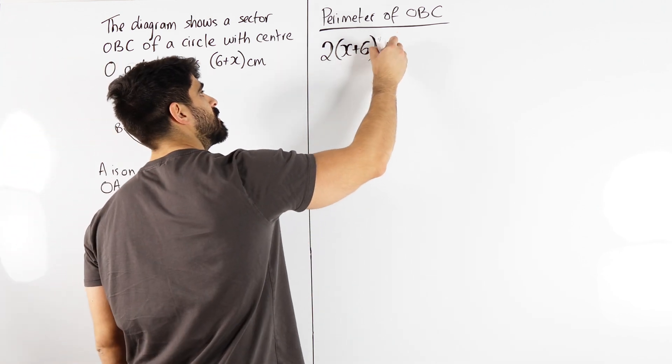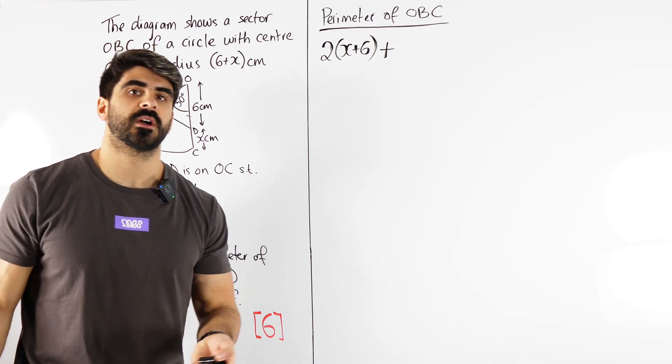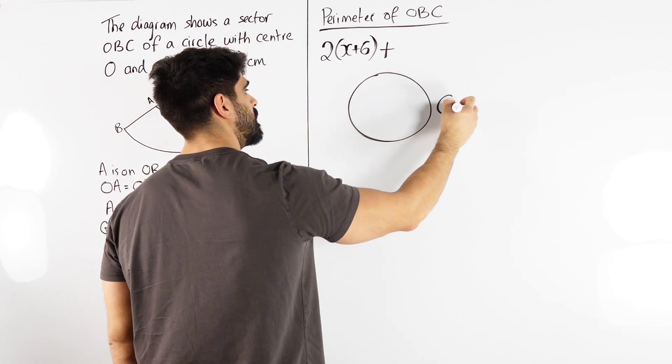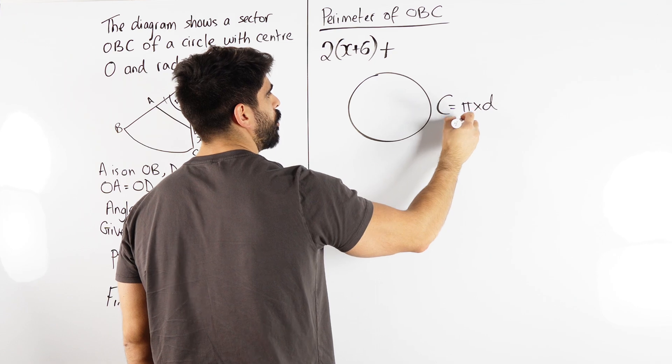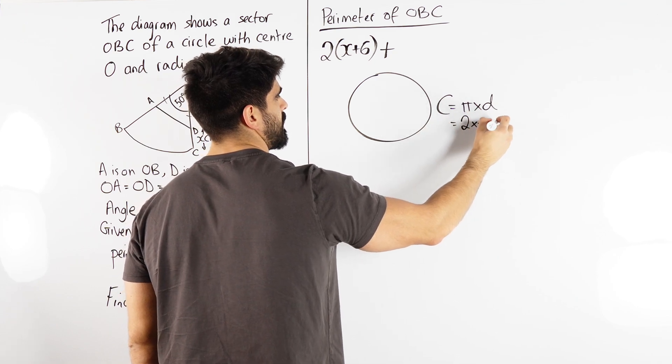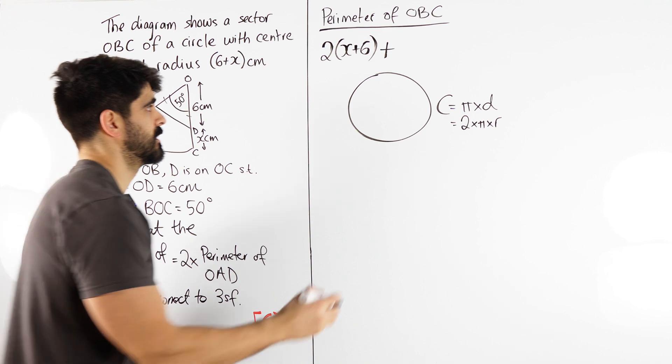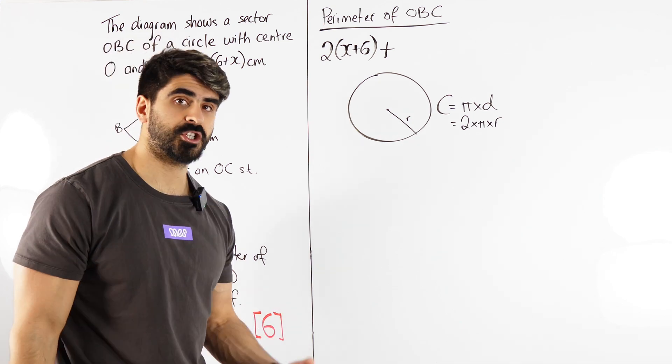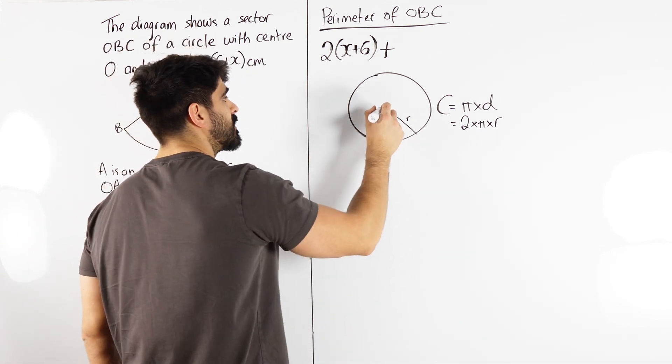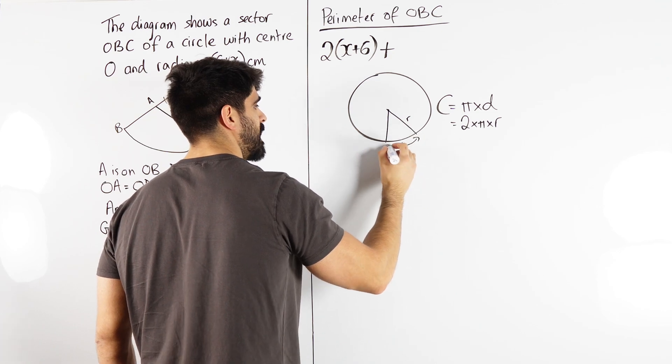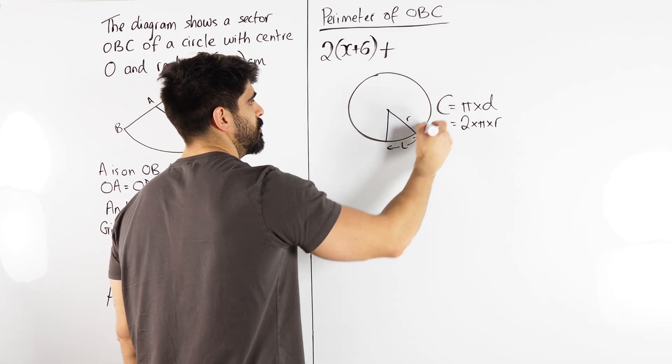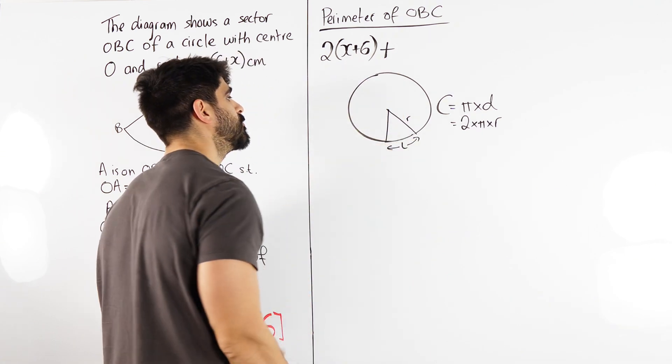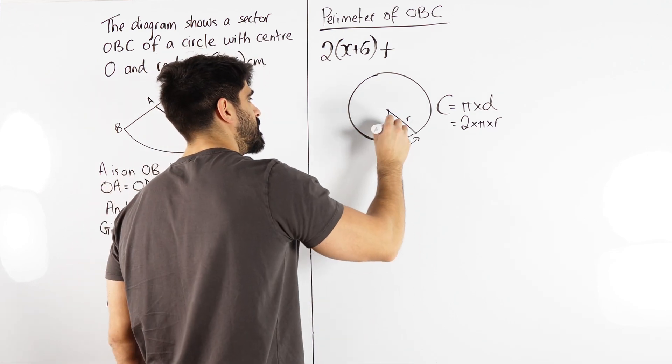So we need to add the arc length. Now how do you work out the circumference of a circle? Well for a full circle, the circumference is pi times the diameter, or 2 times pi times the radius. Okay, so given that radius. But we are taking a fraction of that circle.